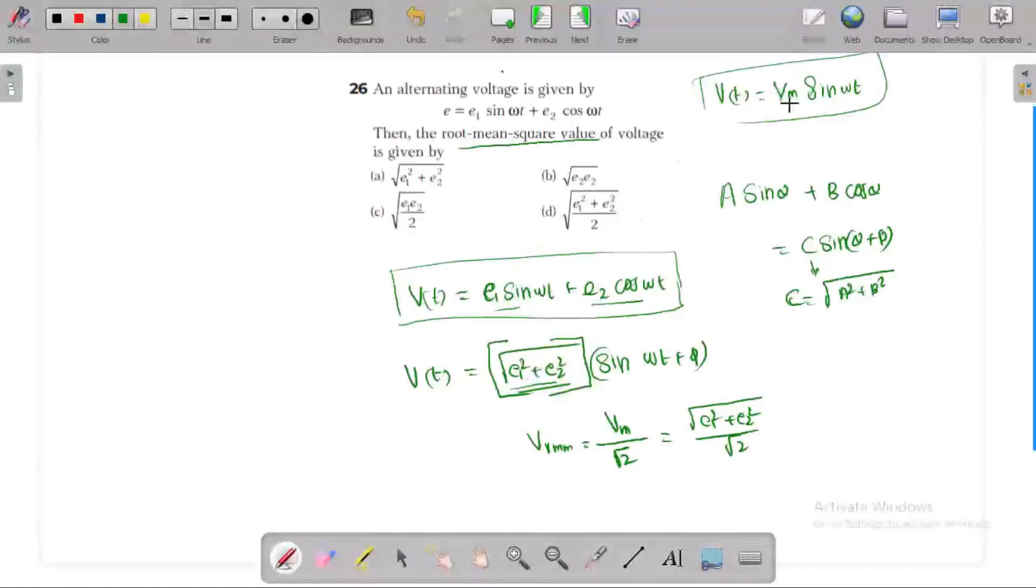So the answer is D: Vm is equal to square root of E1 squared plus E2 squared. Very simple question.